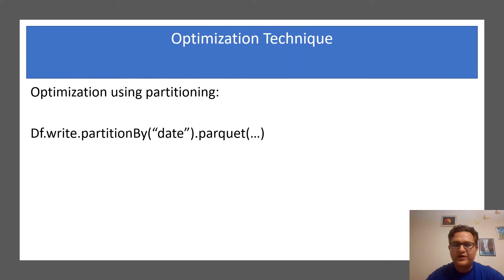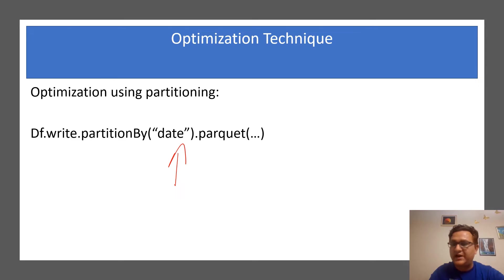The third very important optimization technique is Partitioning. When writing code, make sure you are creating partitions. It depends on your organization's data — here we are taking a date example, making date-wise partitions. Date-wise partitioning will definitely help performance. You can also make hourly folders or even minute-specific partitions, but make sure the partitioning you choose contributes to your performance.